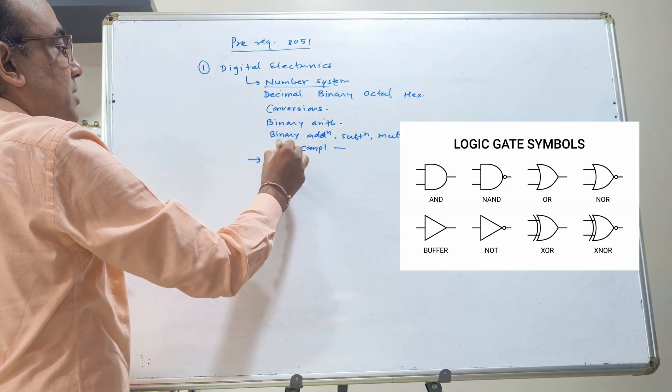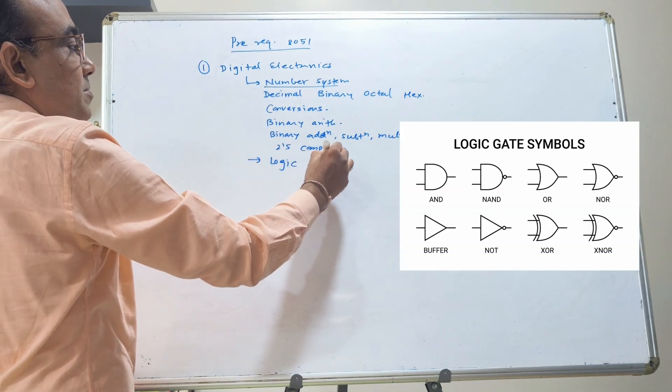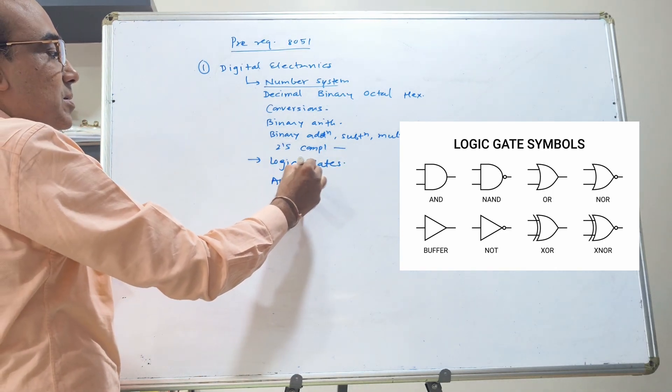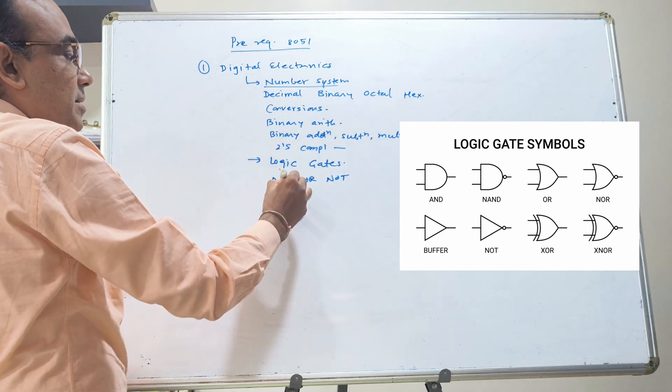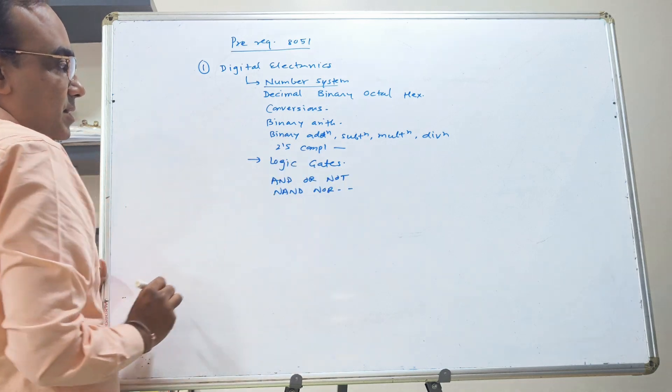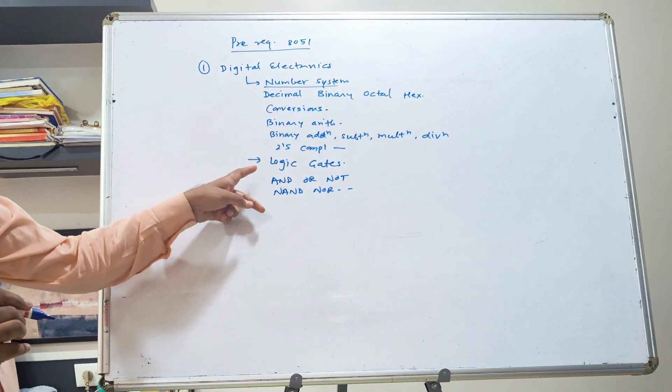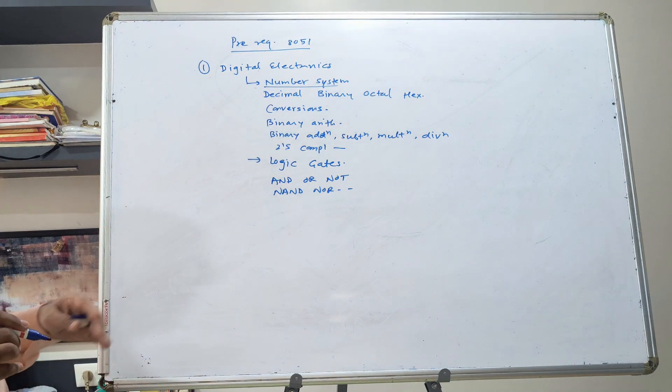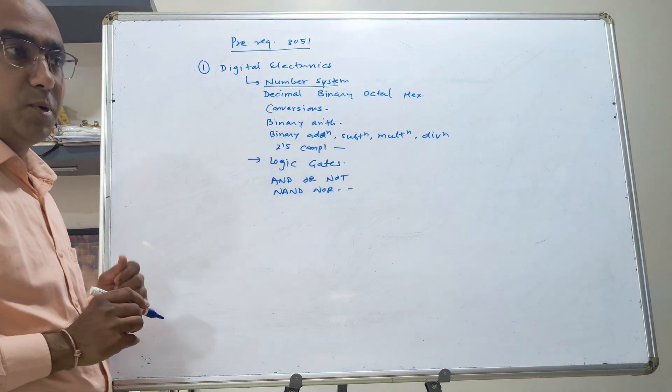Then you should know the logic gates. AND, OR, NOT, NAND, NOR, etc. Once you know the logic gates, you can understand the logic and even that logic is needed in programming as well.